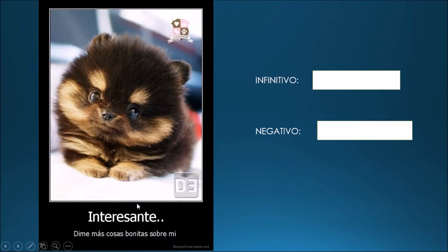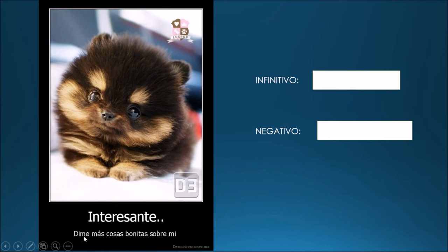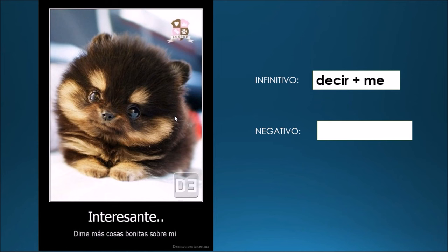Otro ejemplo con pronombre: dime más cosas bonitas sobre mí — tell me more nice things about me. Dime: if you recognize, we've got another one of those eight irregulars, plus the pronoun me — tell me. Di is irregular. Y el infinitivo: decir. Negativo: no me digas. Don't tell me. We know here decir is another one of those yo-go verbs.